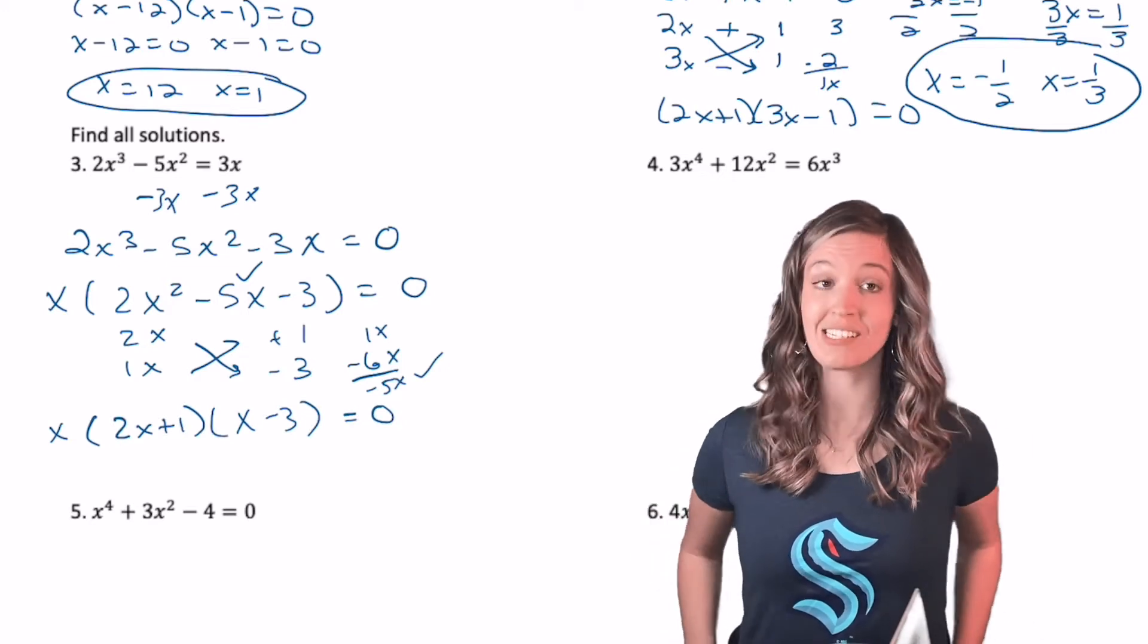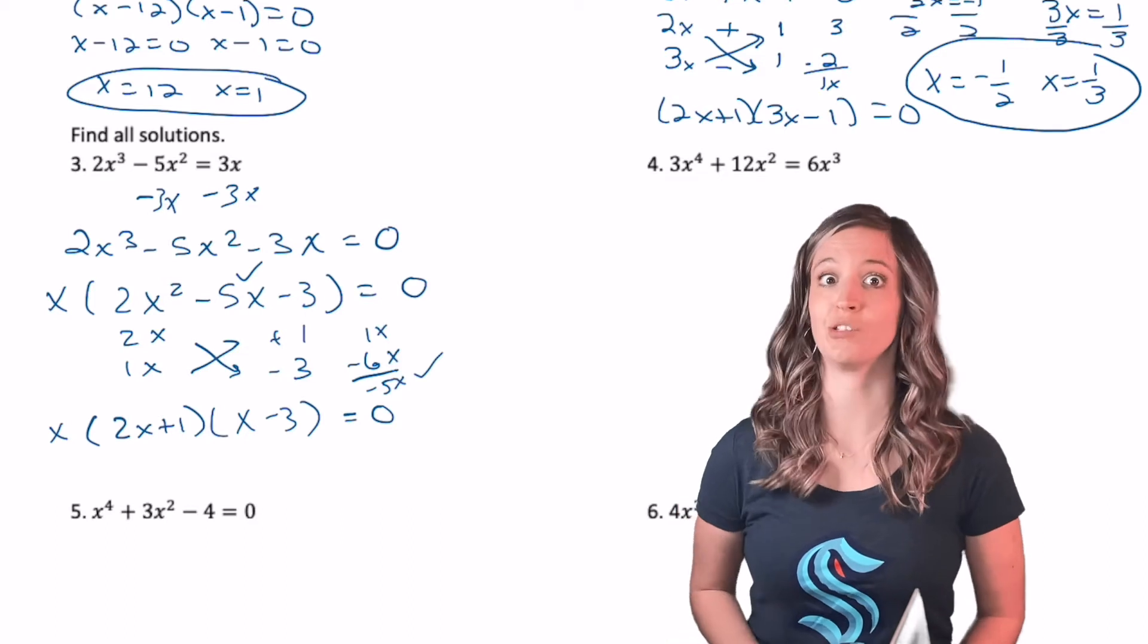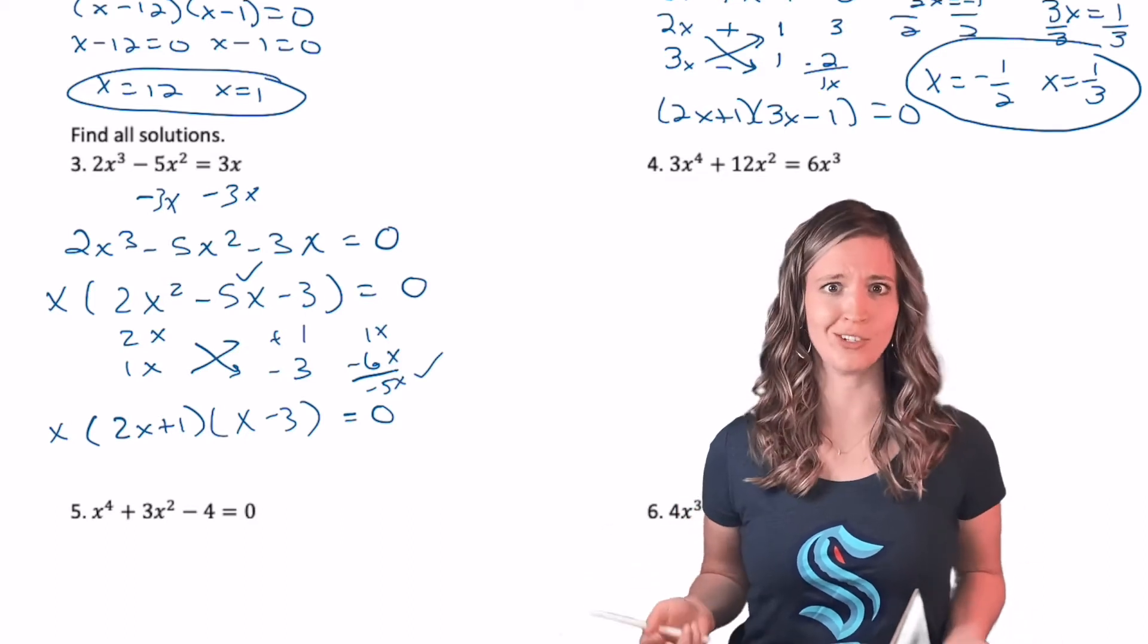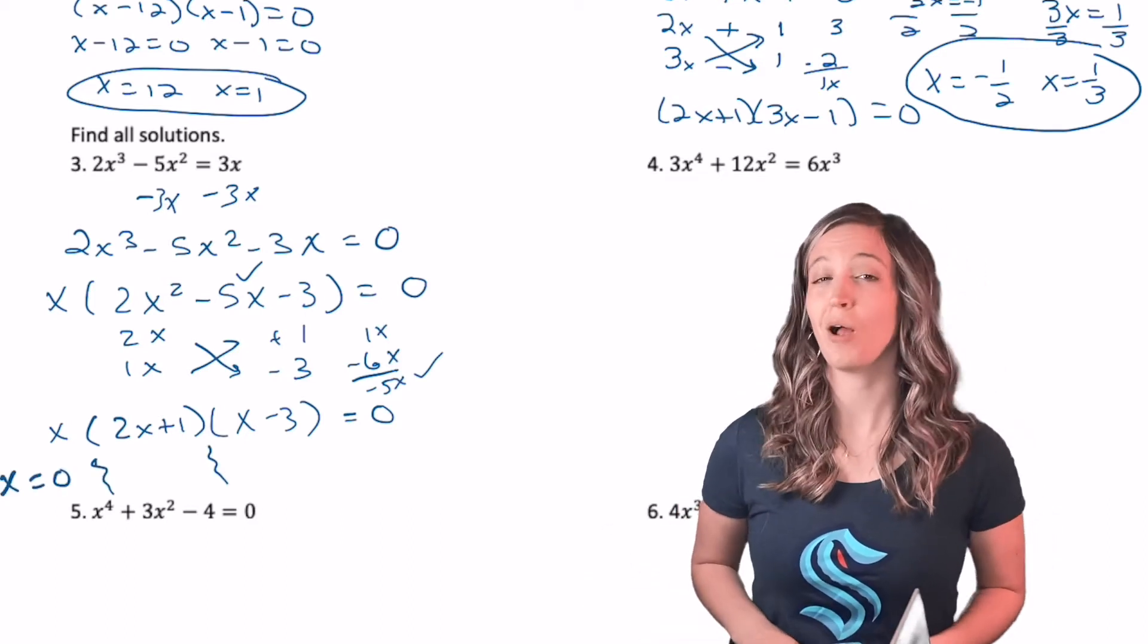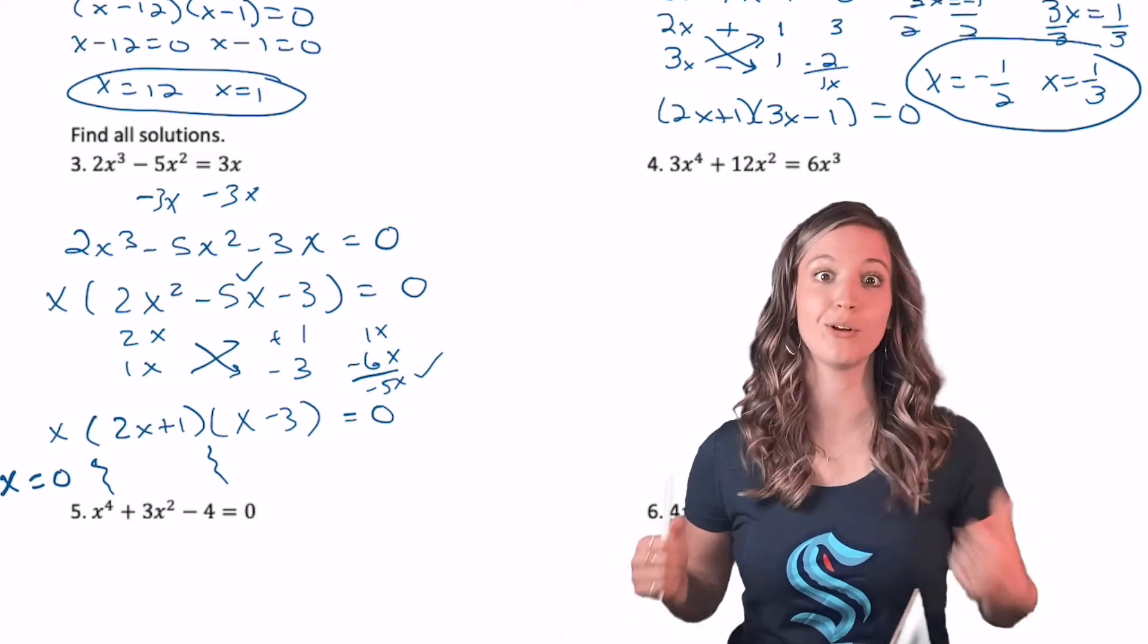So my final factored form is X times 2X plus 1 times X minus 3. All right, we still have solving to do here, so let's get cracking. Using zero product property, I can set each of these factors equal to zero and solve. Go for it.